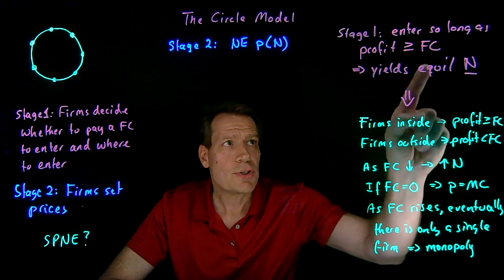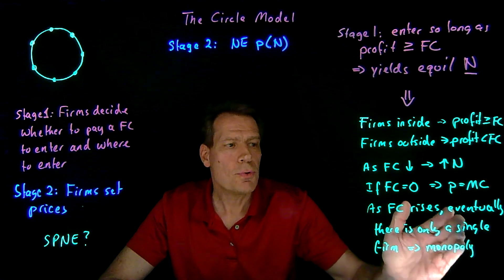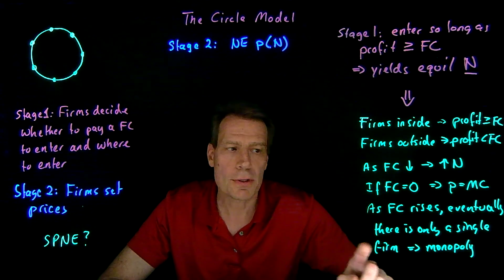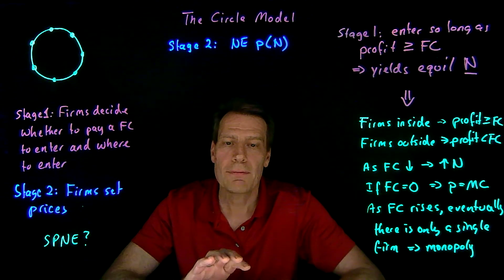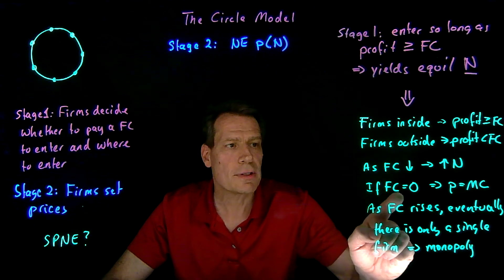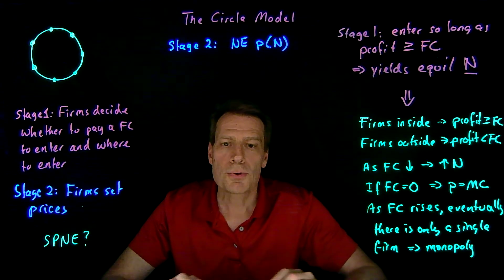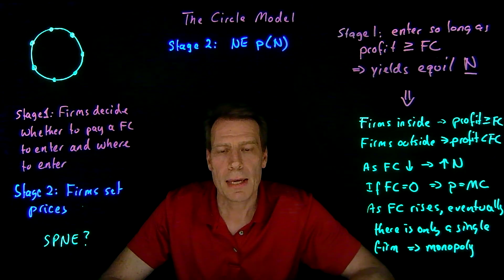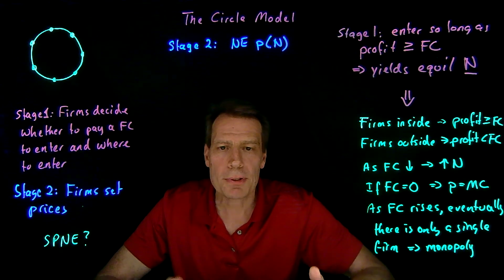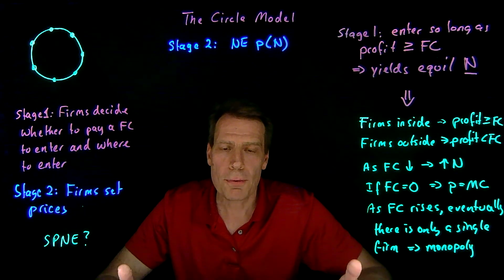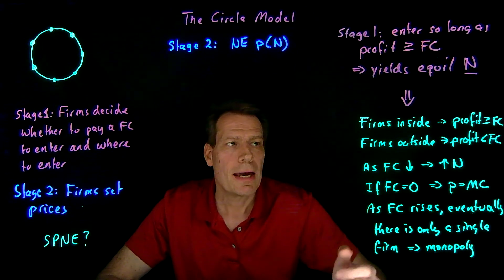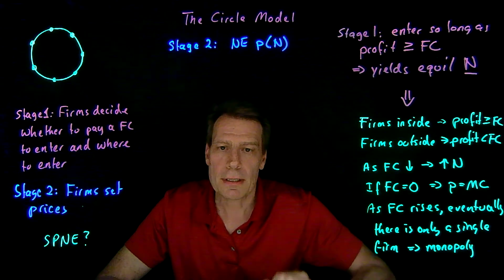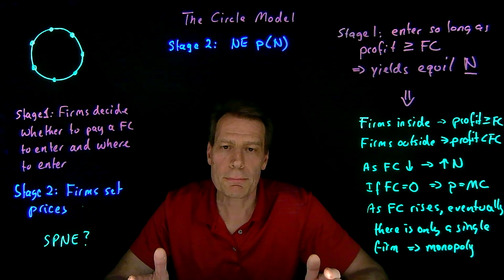As we change the fixed entry cost, we move from a really high fixed entry cost where there's only a single firm and a monopoly, to cases with two, three, four firms, eventually a much larger number of firms, and finally — as that fixed cost falls to zero — so many firms that perfect competition results. So we found a second way of filling the gap between perfect monopoly and perfect competition: firms differentiate their products but engage in price competition and enter the circle of product differentiation as the fixed cost falls.